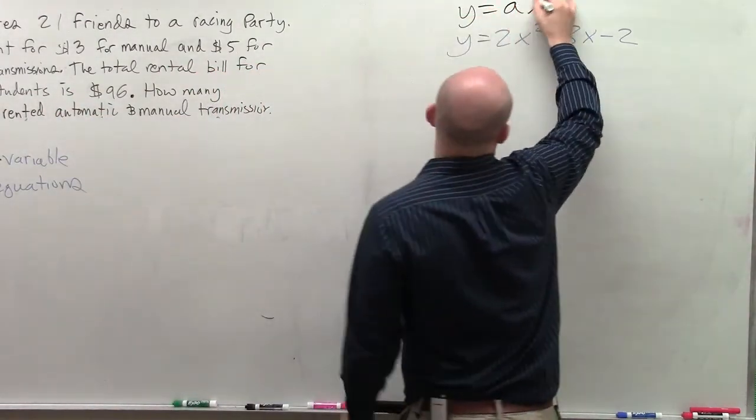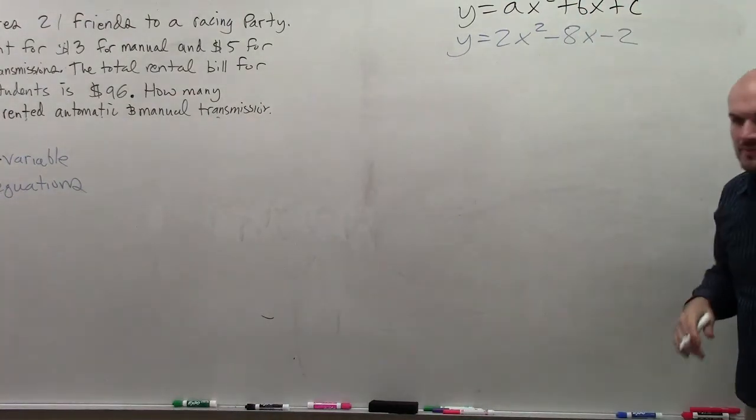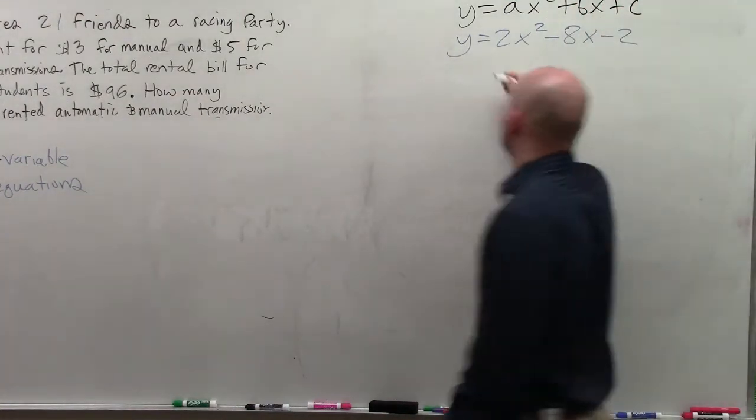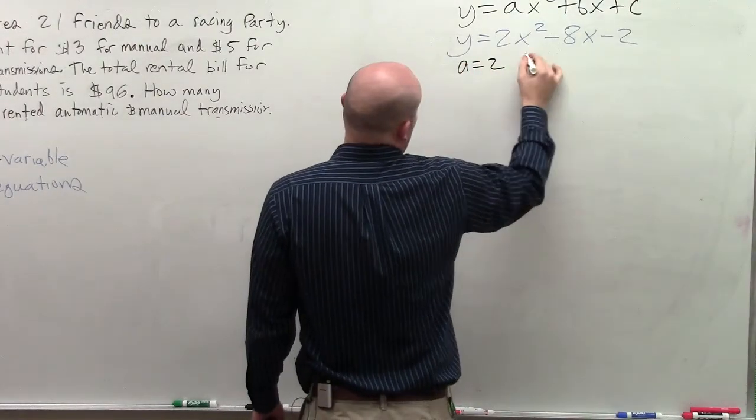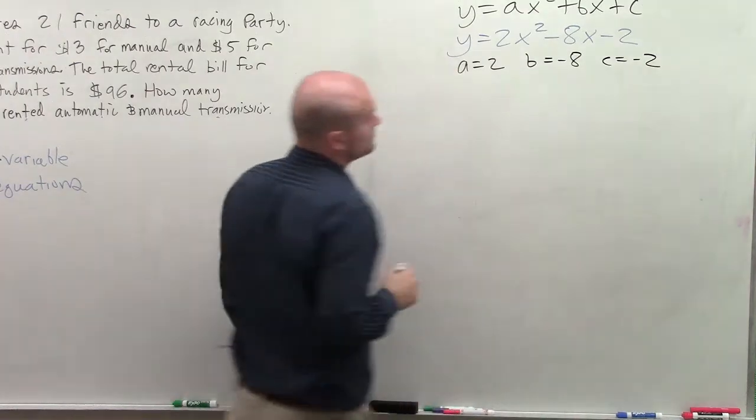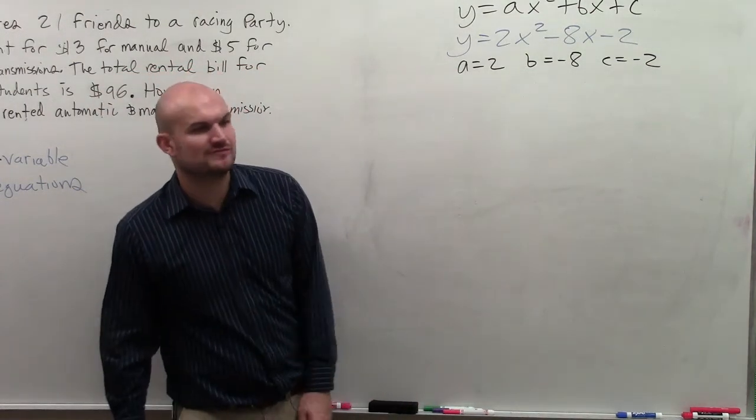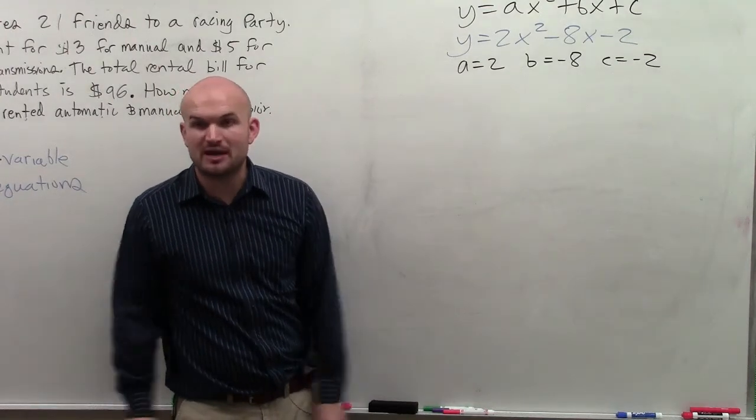So the standard form is y equals ax squared plus bx plus c. So the first thing I want you guys to do is just identify what is your a, your b, and your c. It's really easy. Okay, so if you have trouble, that's the first thing I'm going to ask you. What's your a, b, and c?